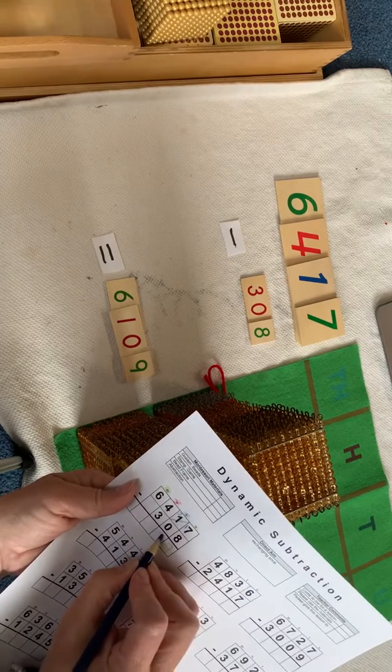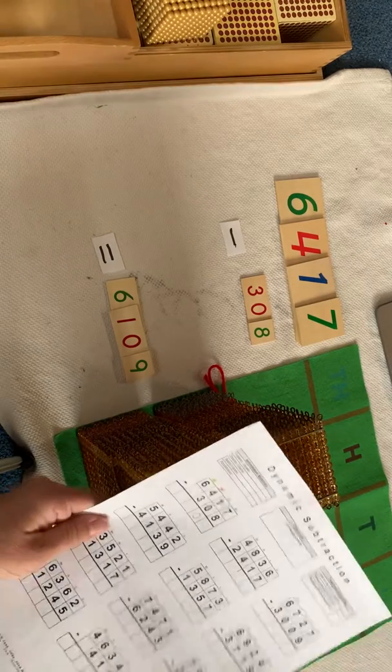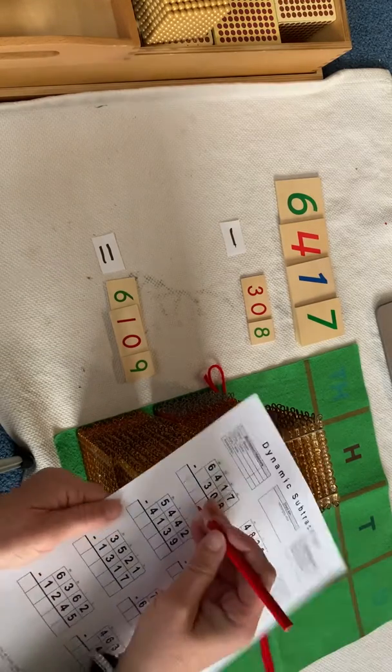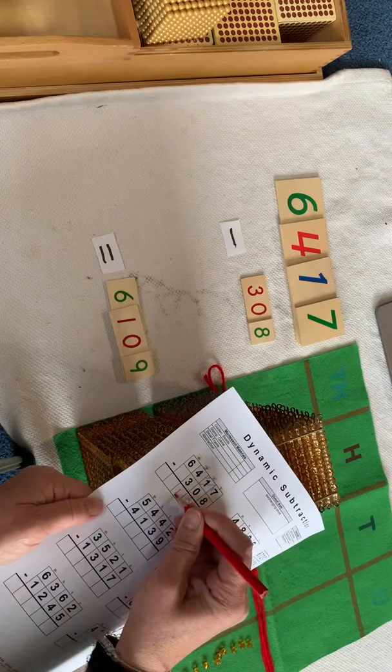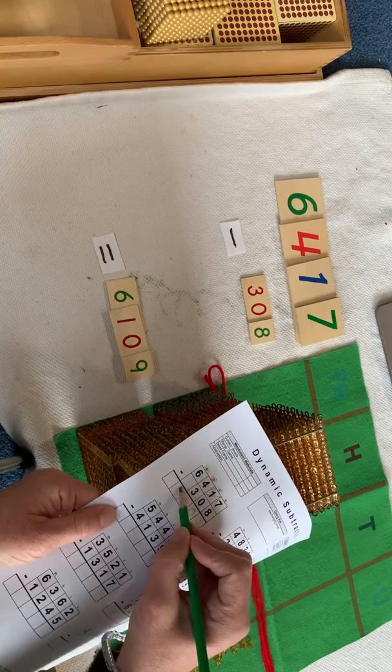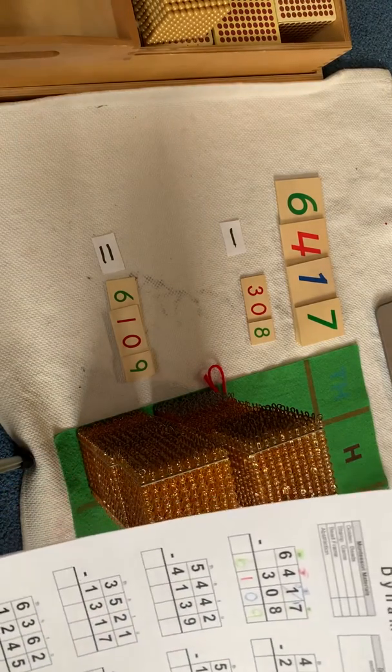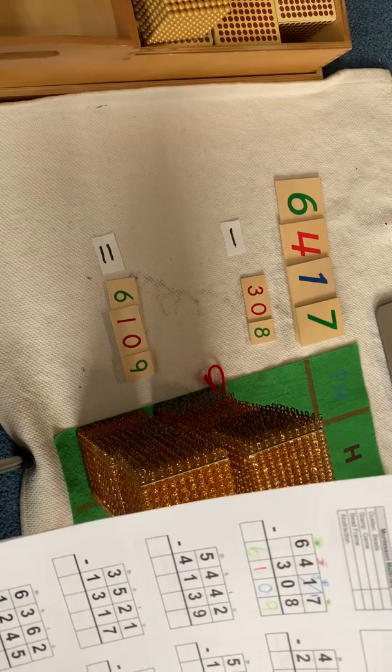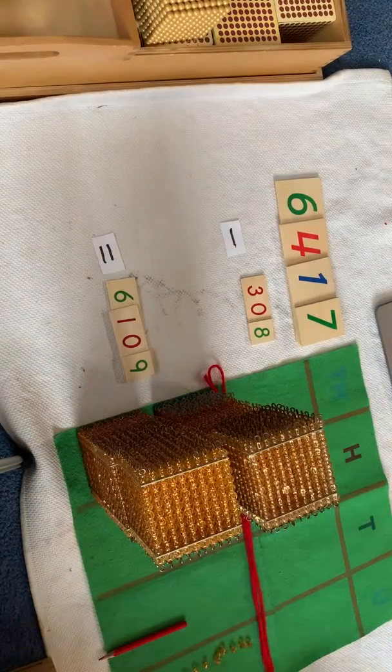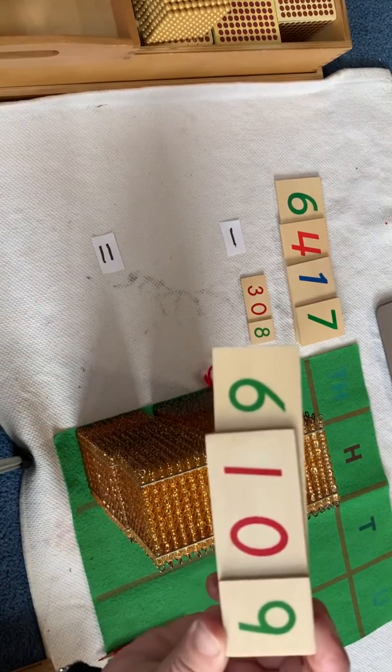And so our answer in tens is zero. Because it's zero minus zero. Now we move on. We're going to look at the hundreds. Four minus three. Well, we discovered that that is one. And then the next one was six minus zero, right? We discovered that that's just six. So our answer is six thousand, one hundred, nine. And look, here's our answer. Six thousand, one hundred, nine.